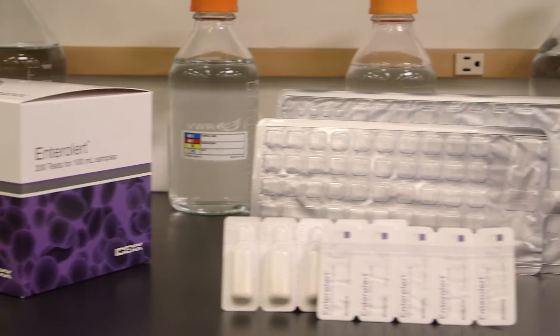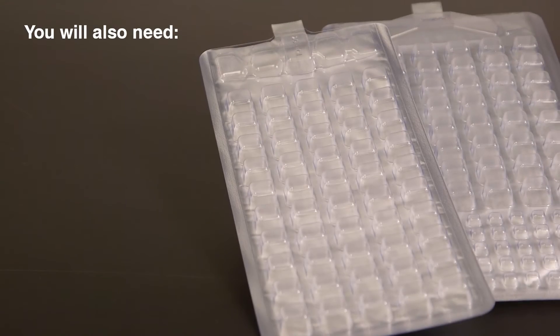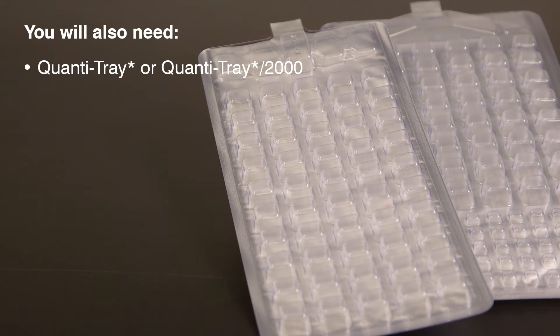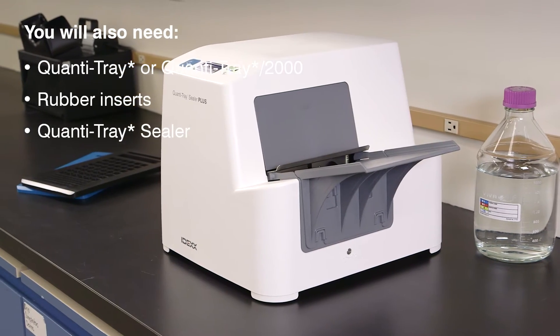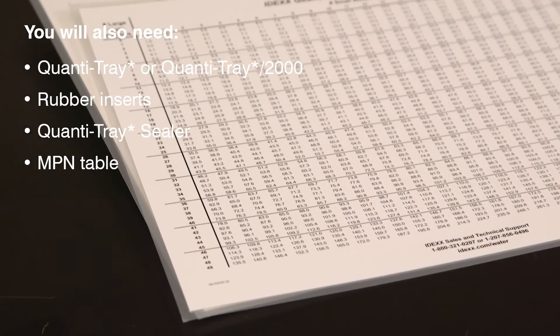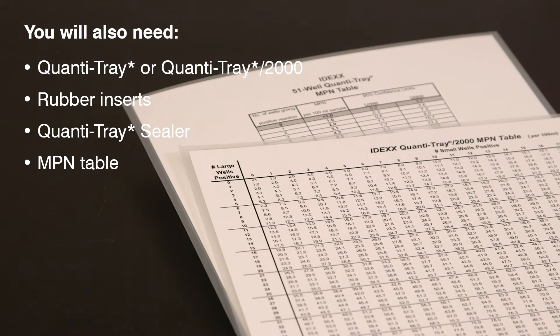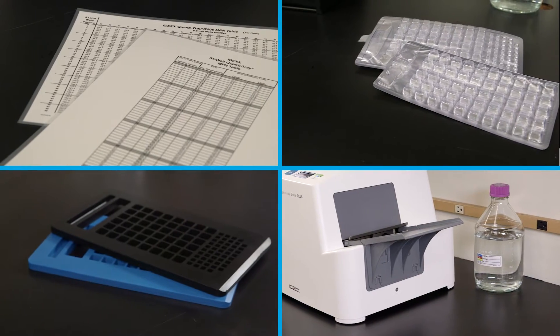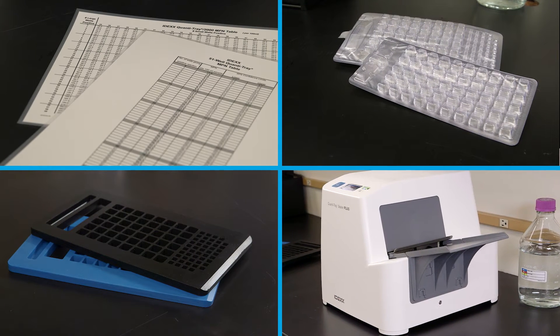In addition to the materials used for presence-absence detection, for quantification you will need a Quantitray or Quantitray 2000, Quantitray rubber inserts, a Quantitray sealer, and the included most probable number table or the IDEXX automated MPN generator program found at IDEXX.com. All of these items are included in the Quantitray system and are available from IDEXX.